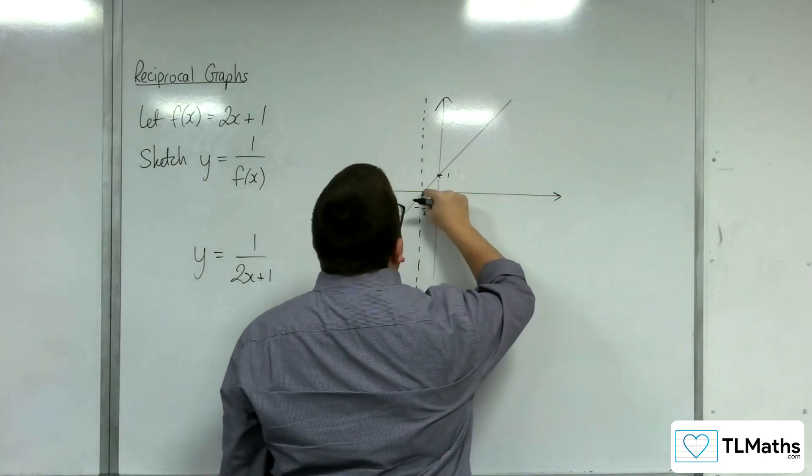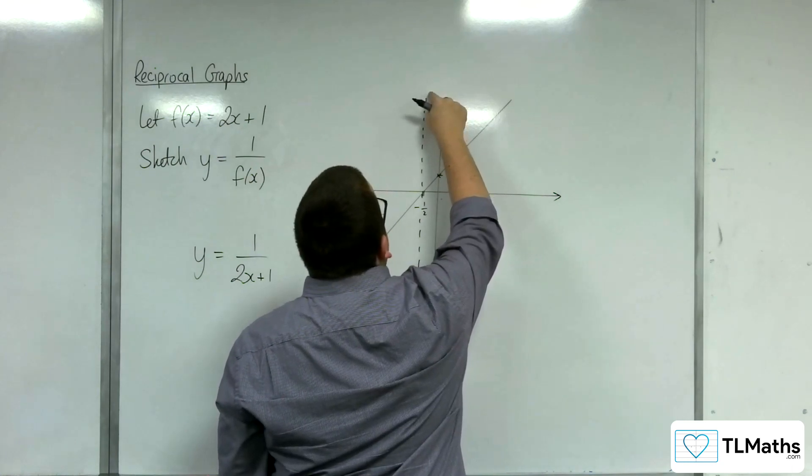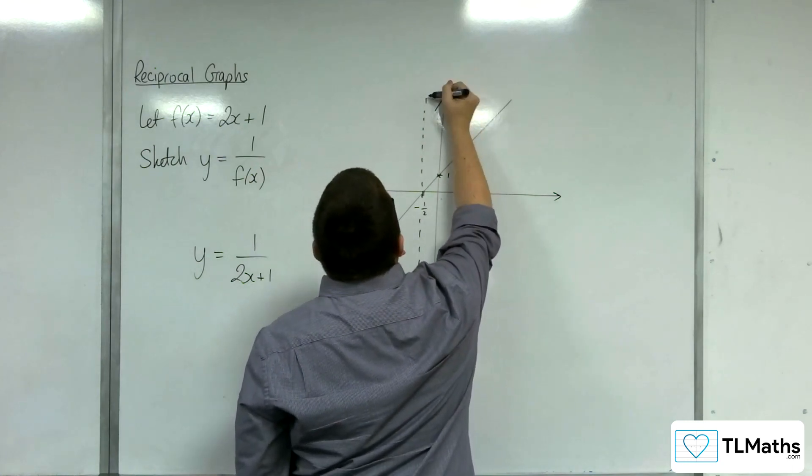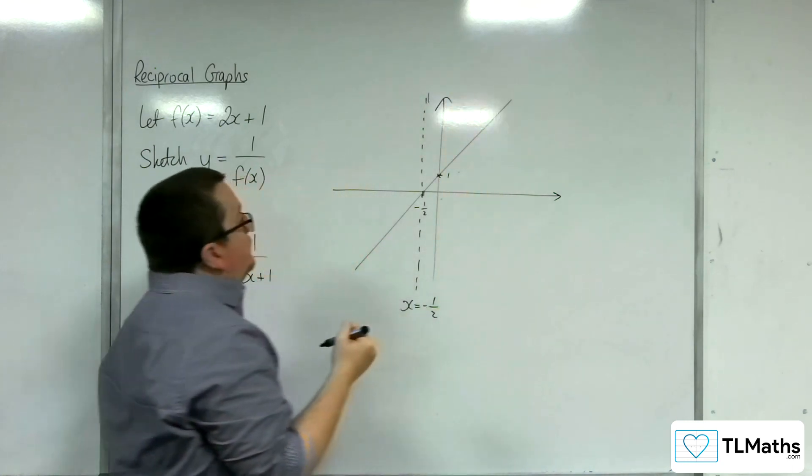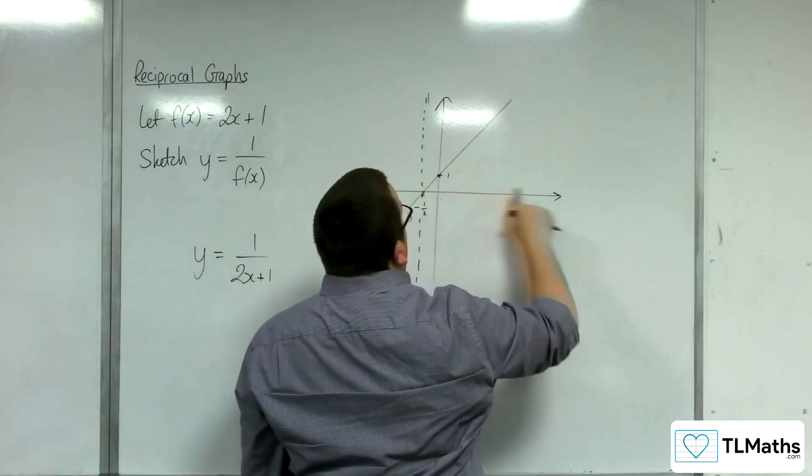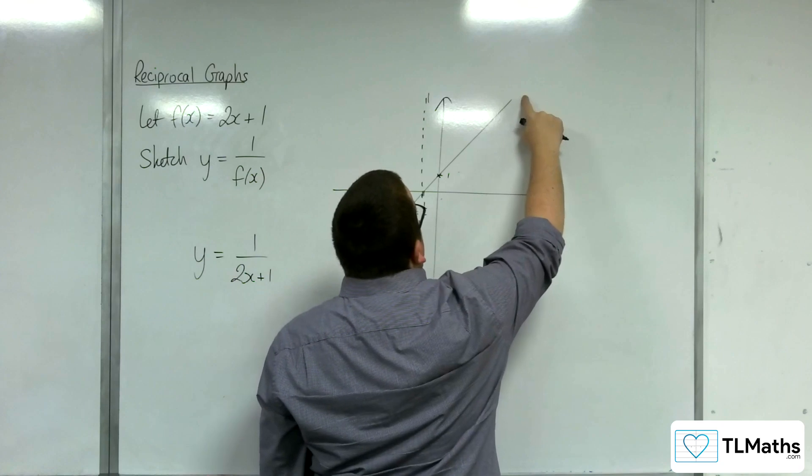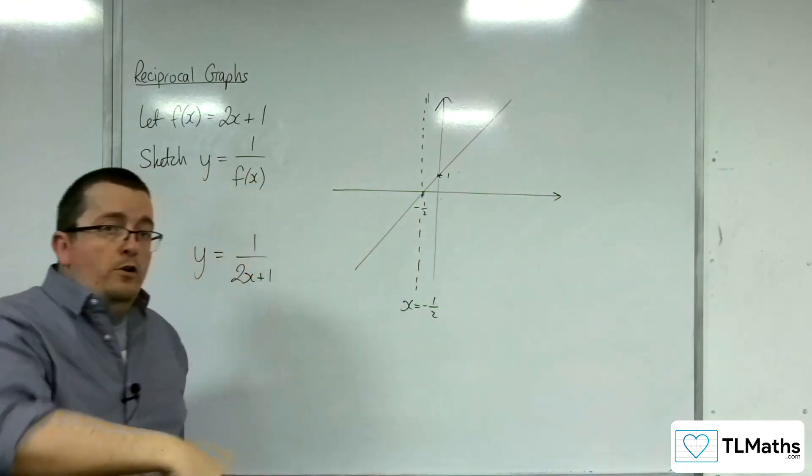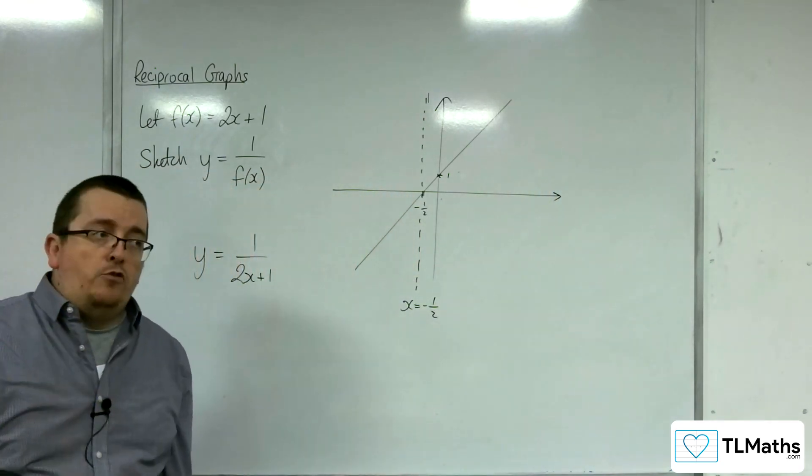So 1 over f(x) must be very large. And so it must come in from that direction. And as my x value increases, f of x is increasing. So 1 over f(x) must be decreasing.